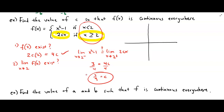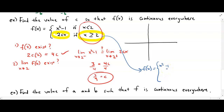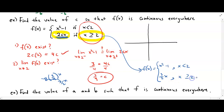Find the value of c so that the function is continuous everywhere — we figured it out: c is three fourths. If we rewrite this in blue, now that we know c, the function becomes x squared minus 1 for x less than 2, and 2 times three fourths times x equals three halves x, for x greater than or equal to 2. So we have those two pieces of the piecewise function.